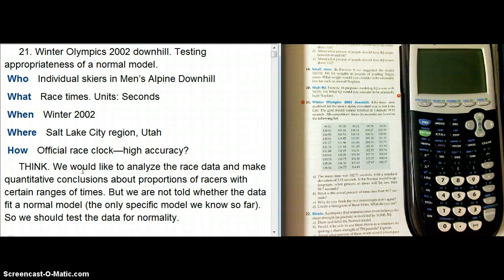So here's the setup. We'd like to analyze this race data and ideally make conclusions, for example, quantitative conclusions with real numbers, about proportions of racers with certain ranges of times. But we're not told whether the data fit a normal model, and so far that's the only specific model we know at this point in the course. So we should probably test it.